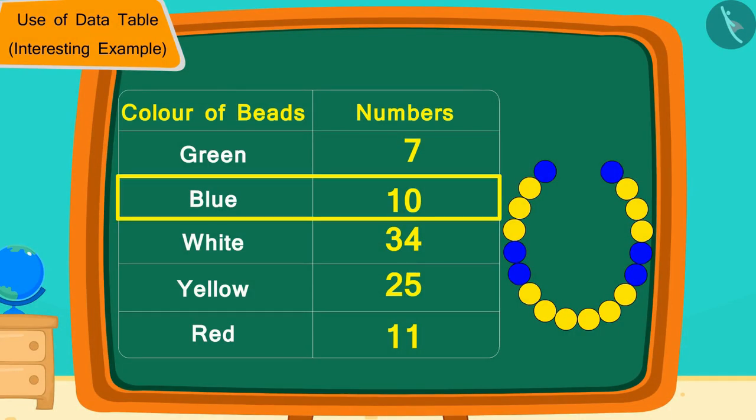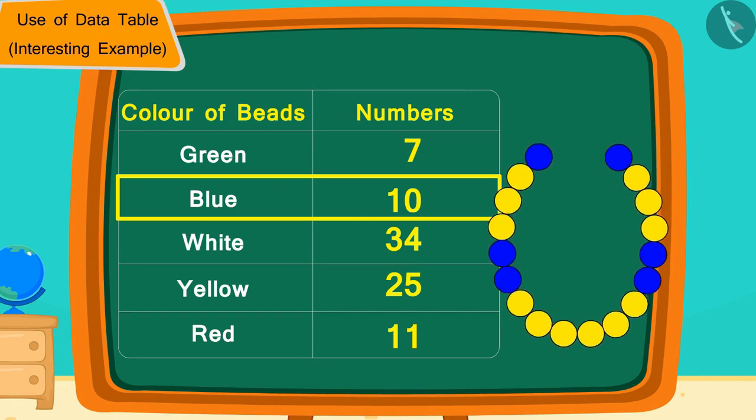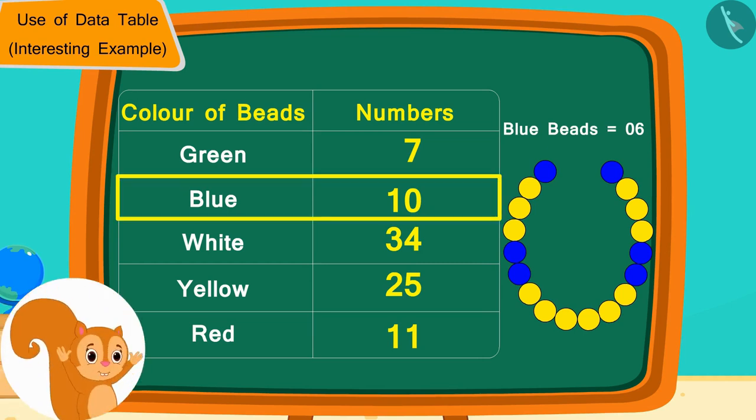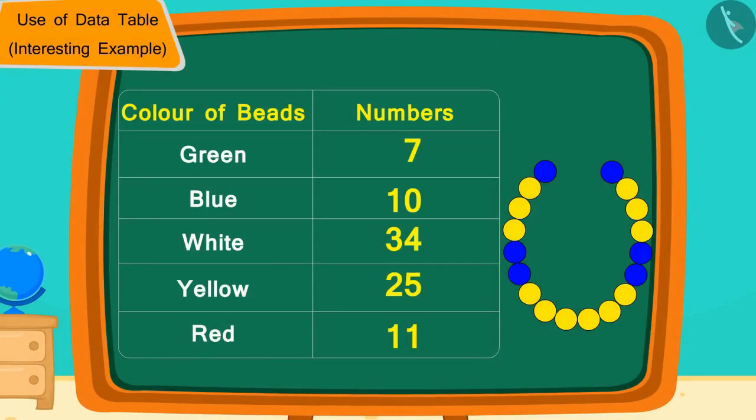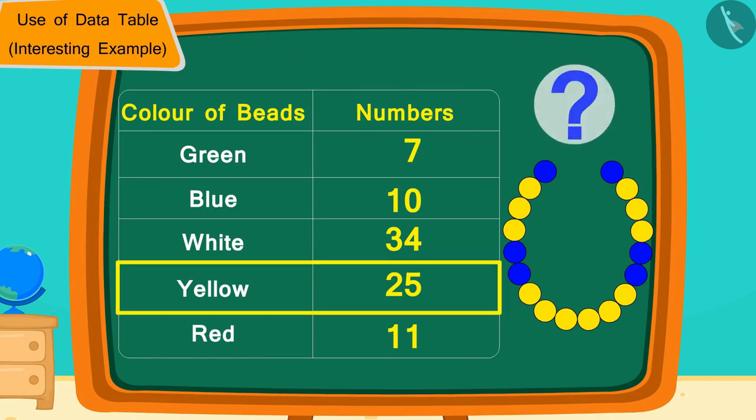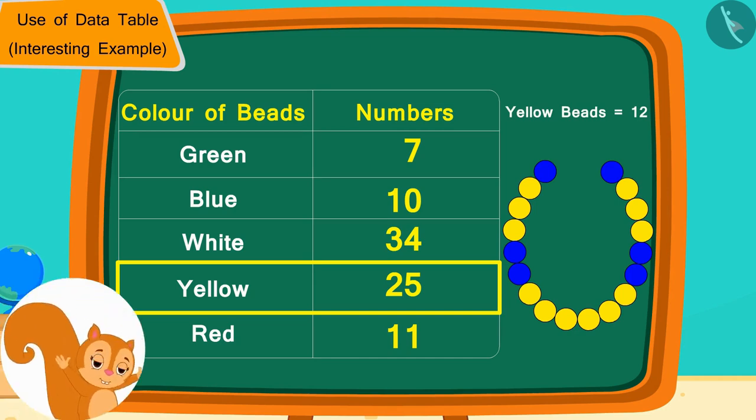Yes, Chanda has 10 blue beads and to make the necklace according to Golu's design she only needs 6 blue beads. Therefore Chanda has enough blue beads to make the necklace. In the same way, how many yellow beads does Chanda have? 25. And how many yellow beads does she need? 12. In this way Chanda also has enough yellow beads for making the necklace.